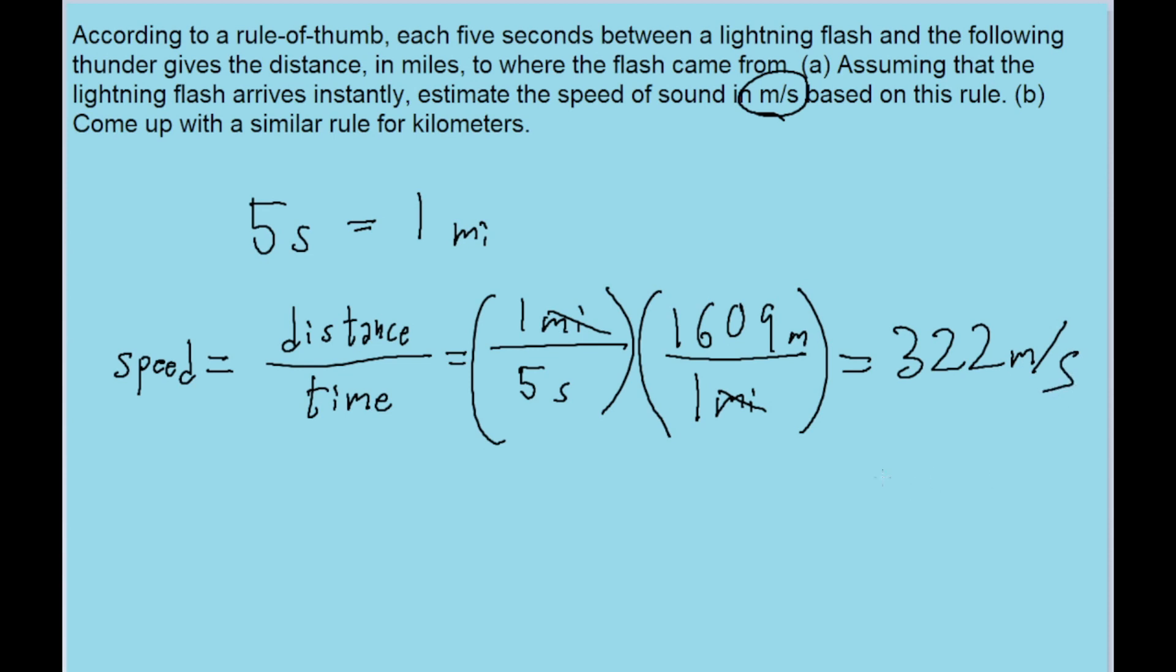Technically, the proper scientific approach is to recognize this is a rule of thumb with values that aren't perfectly accurate. Since we're only estimating, we should round to one significant figure and give an answer of about 300 meters per second.